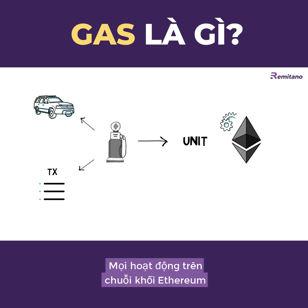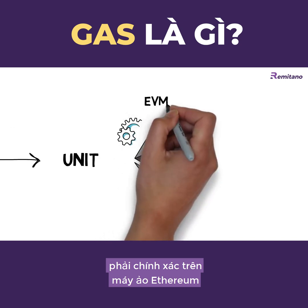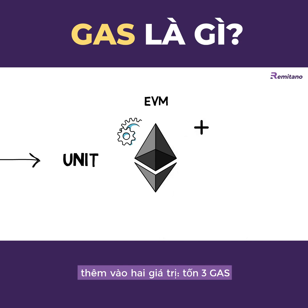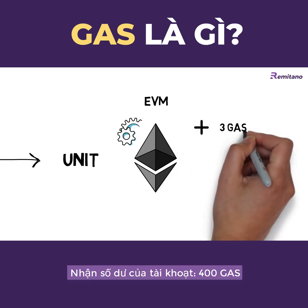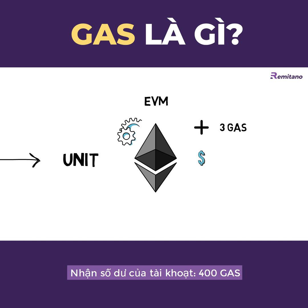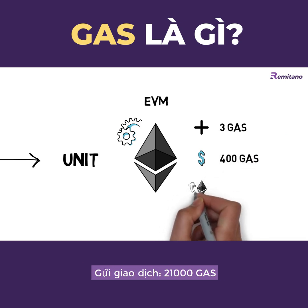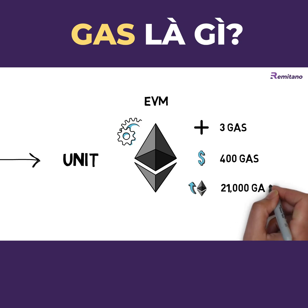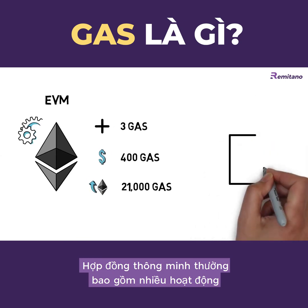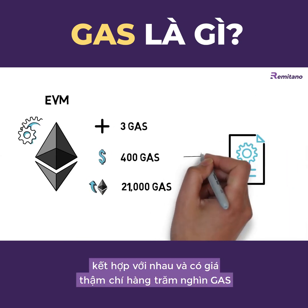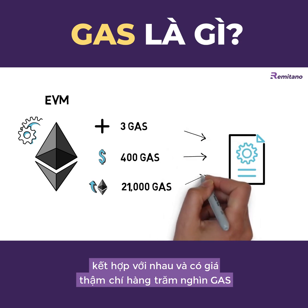Every operation on the Ethereum blockchain, or to be precise on the Ethereum Virtual Machine, has an associated gas cost. For example, adding two numbers costs 3 gas, getting the balance of an account 400 gas, sending a transaction 21,000 gas. Smart contracts usually consist of multiple operations that together can cost even hundreds of thousands of gas.